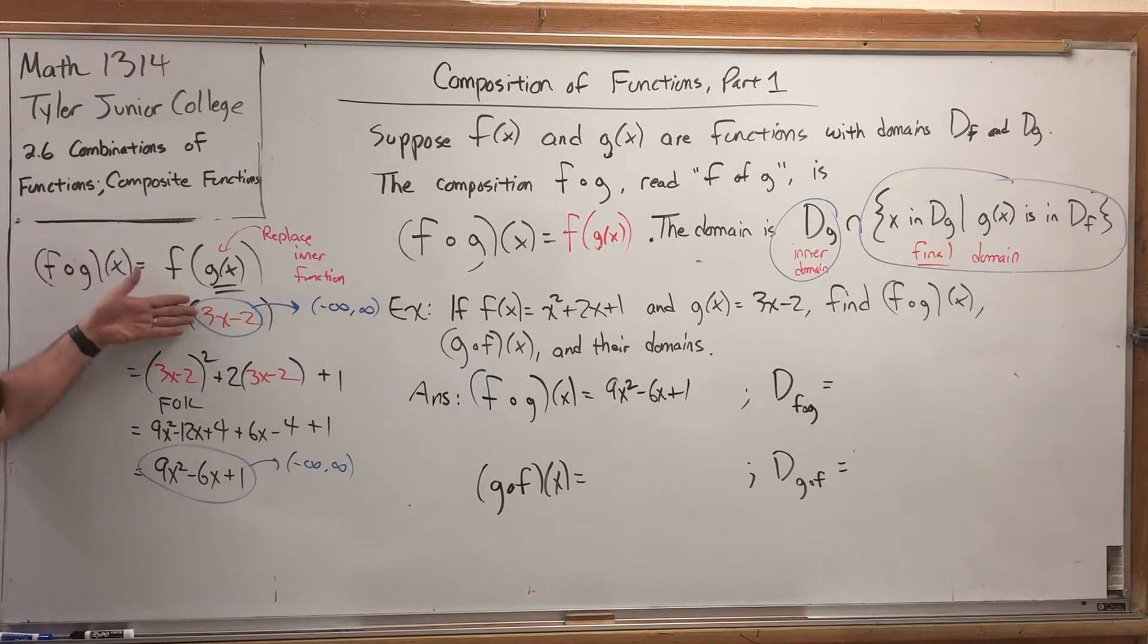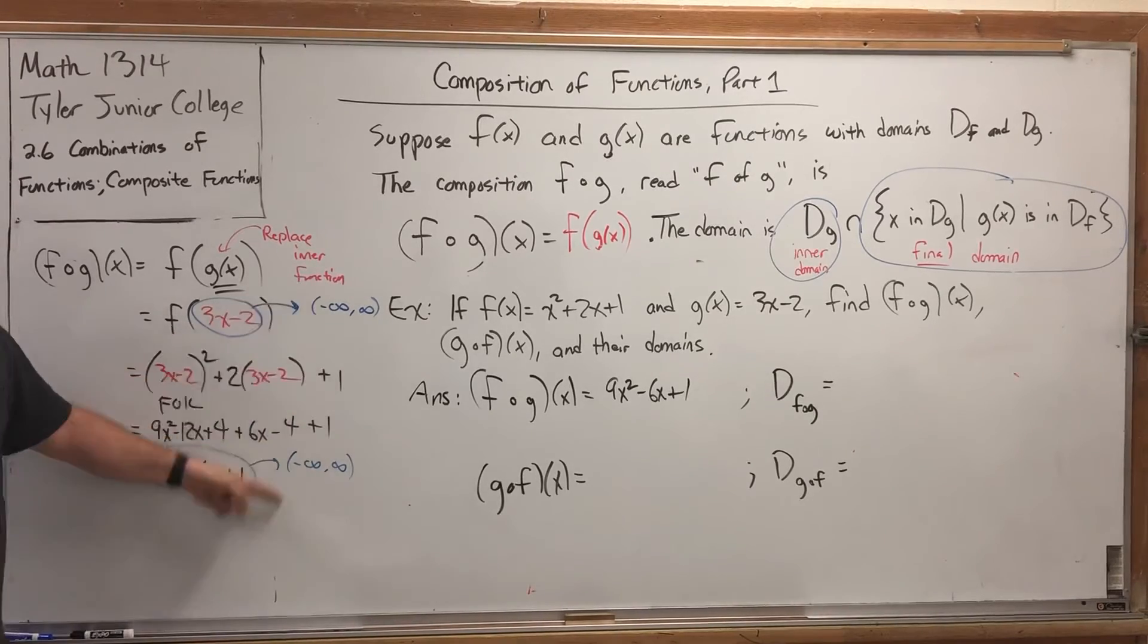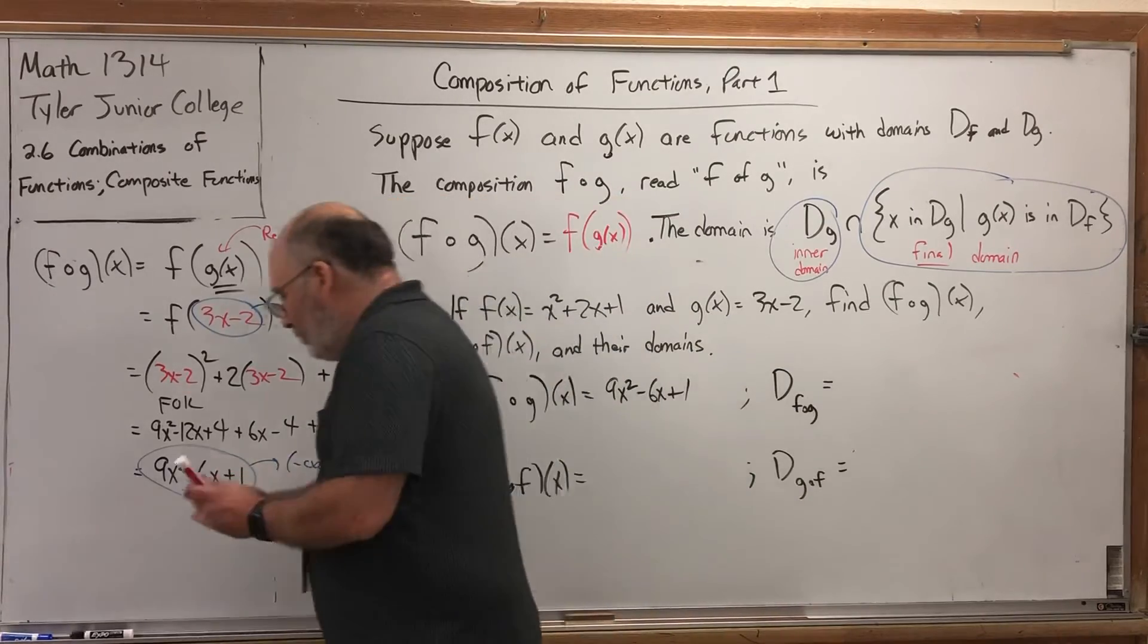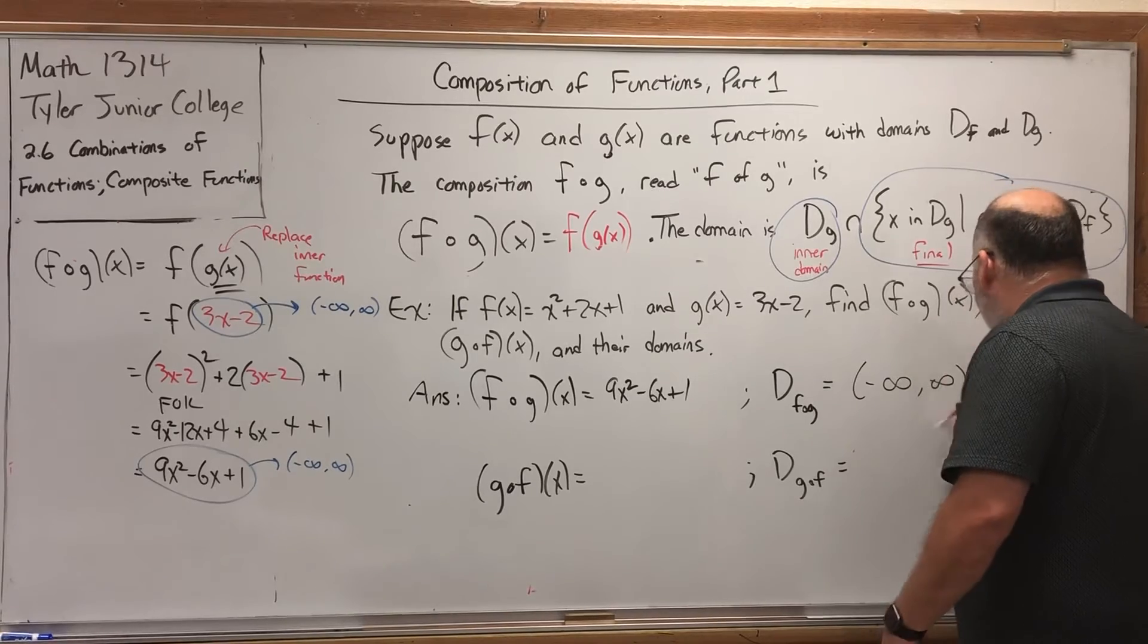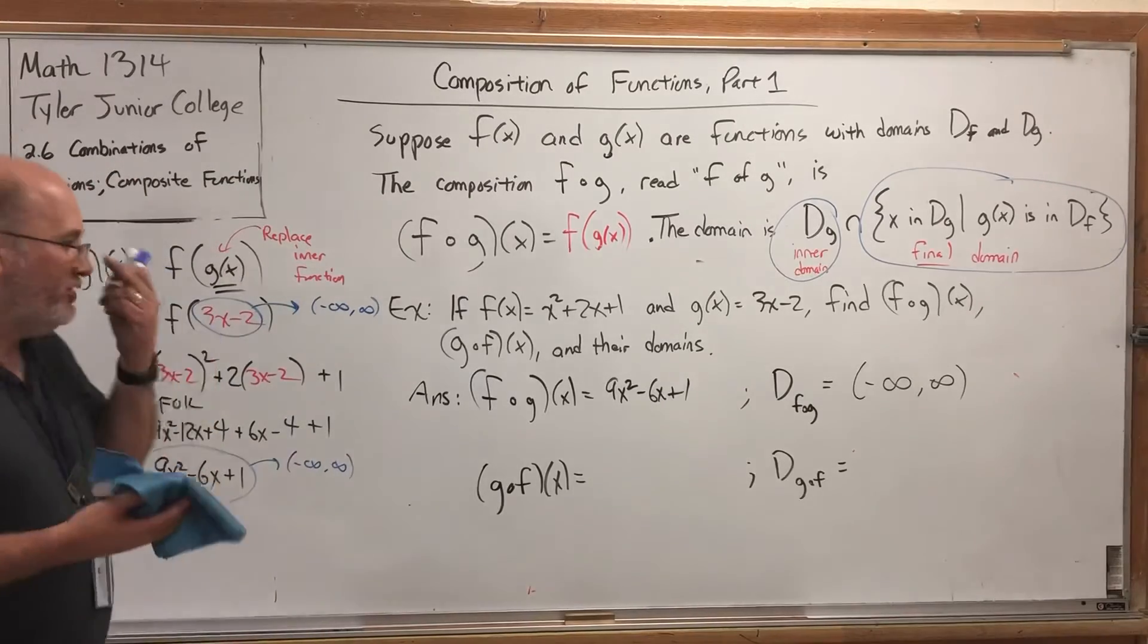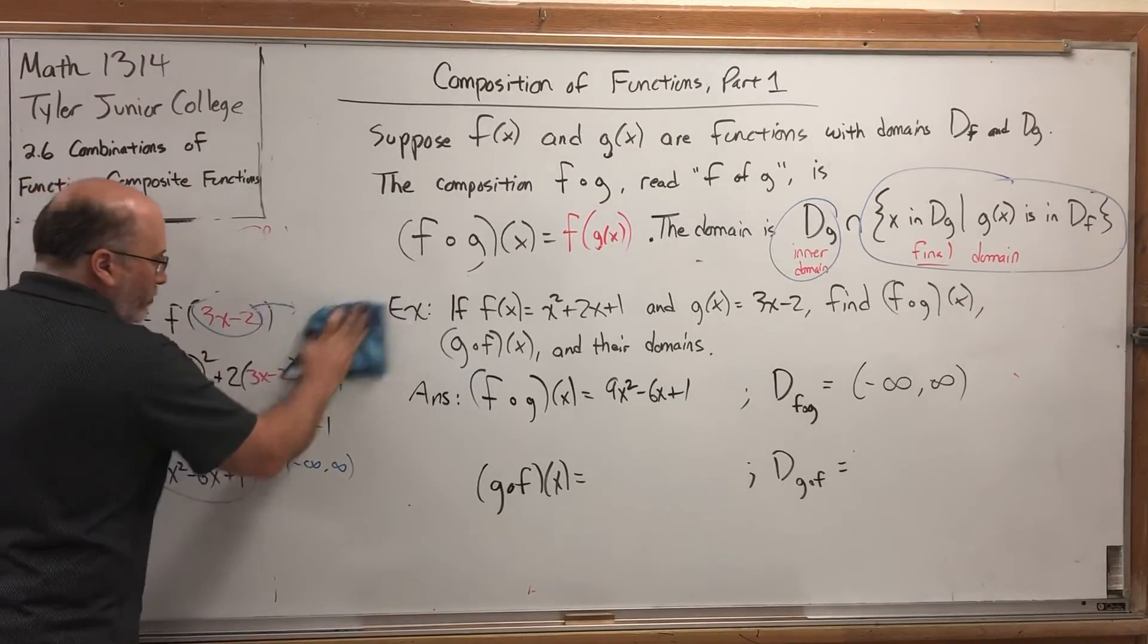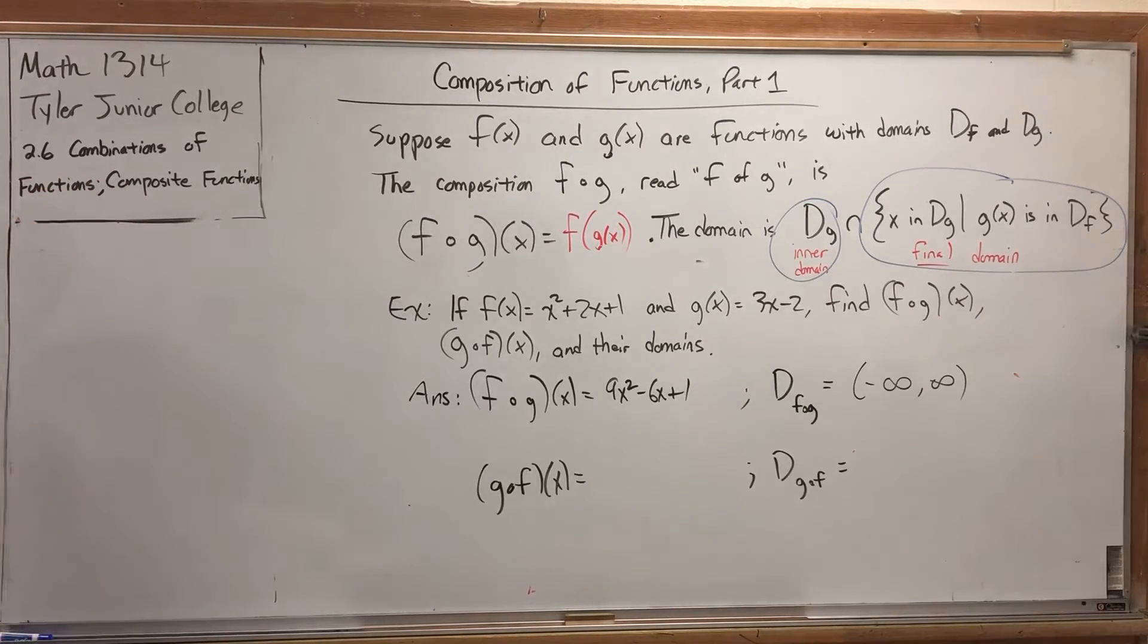These two domains, of course, are all real numbers. So, their intersection is also all real numbers. Negative infinity to infinity. The fact that these were both polynomials was destined to have a domain of all real numbers. Polynomials just don't have domain issues. It's when you start sticking them places you're not supposed to, like denominators or under square roots.